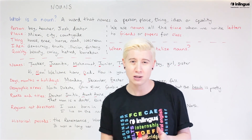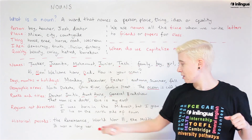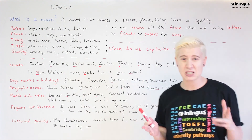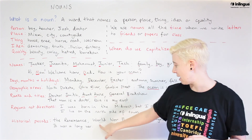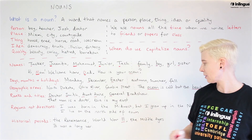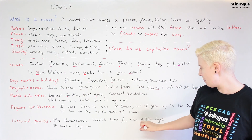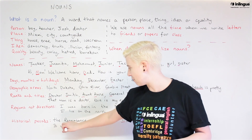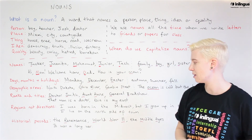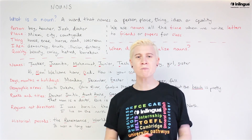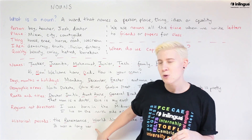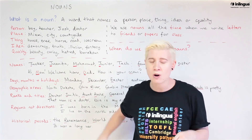Historical periods. The Renaissance — a specific period full of art — gets a capital. World War II is a specific event, so we need capitals. Top tip: we always write that with Roman numeral II, never with the number two. And the Middle Ages — capitals. But if we say 'It was a long war,' when it's describing generally like that, we don't need the capital.